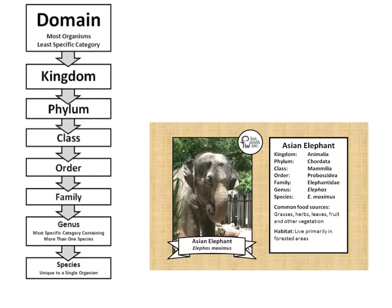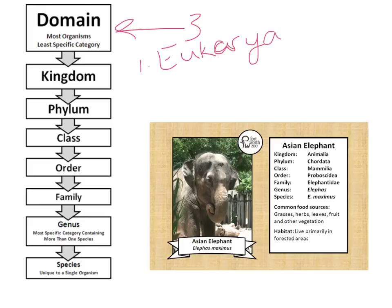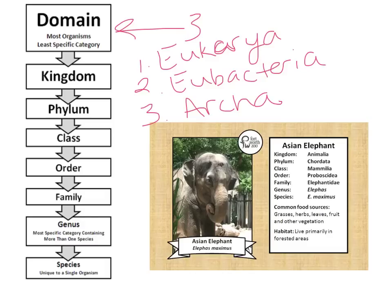These are our different levels of classification. The largest category is domain, and there are three domains: the Eukarya domain, the Eubacteria domain, and the Archaea domain. These are the biggest, broadest categories we have, and the organisms within them still have a lot of variety.